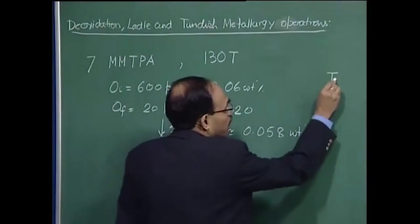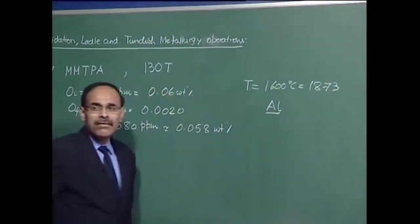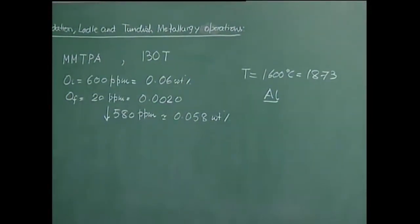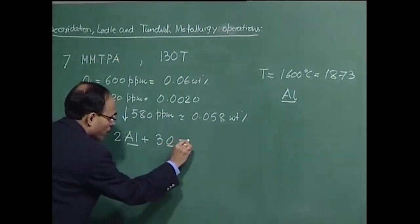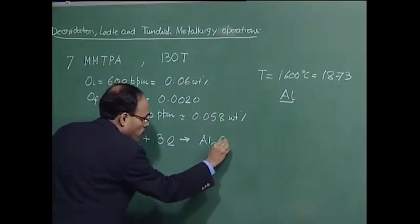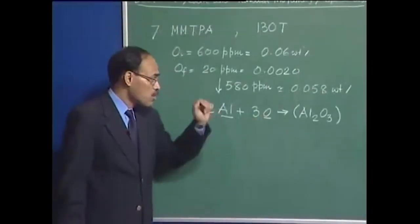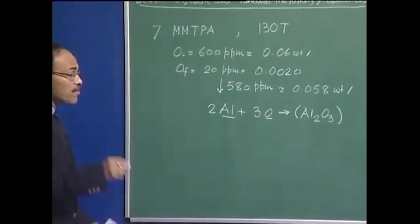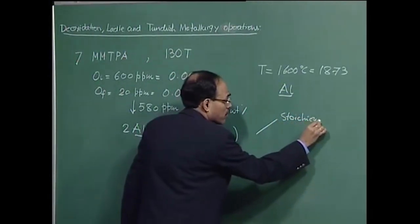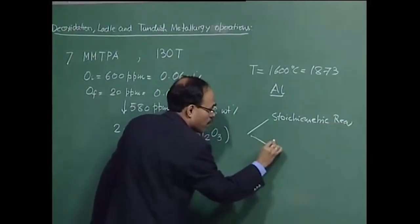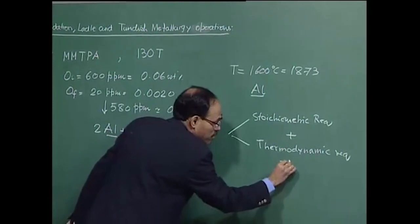Let us also say that the temperature is about 1600°C or 1873 K, and we are considering deoxidation by aluminium only — a case of simple deoxidation. The reaction is 2 atoms of dissolved aluminium reacting with 3 atoms of dissolved oxygen, producing Al₂O₃. The total requirement will be dictated by the stoichiometric reaction requirement as well as the thermodynamic requirement. We have two components and will add them up to get the net requirement.